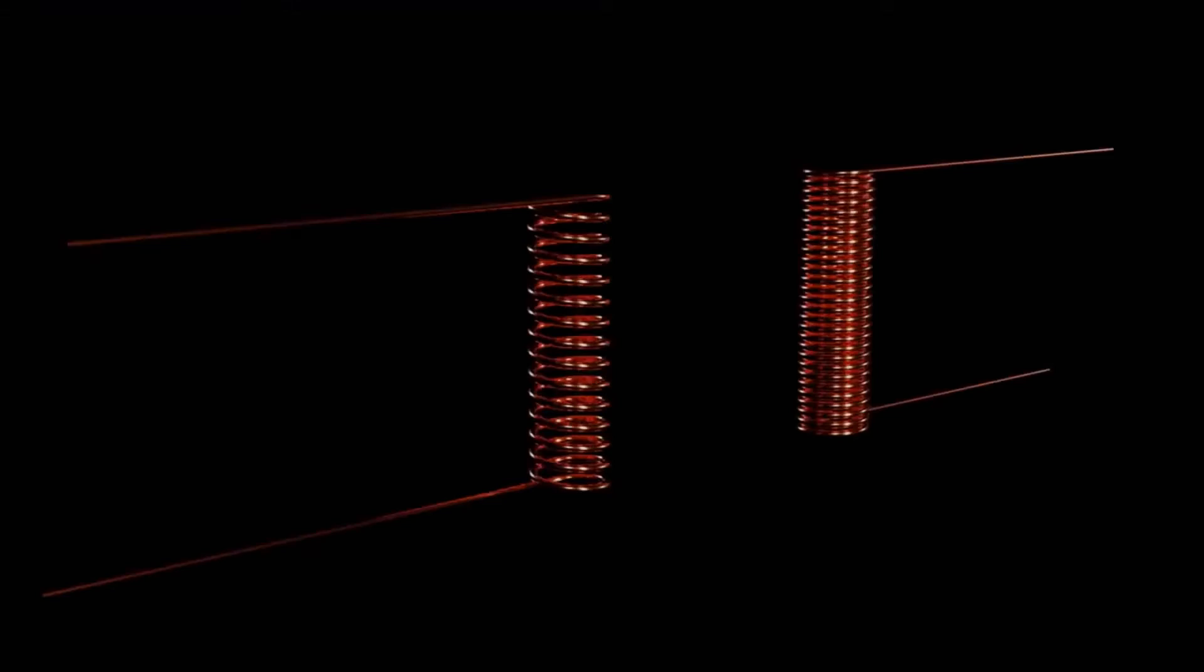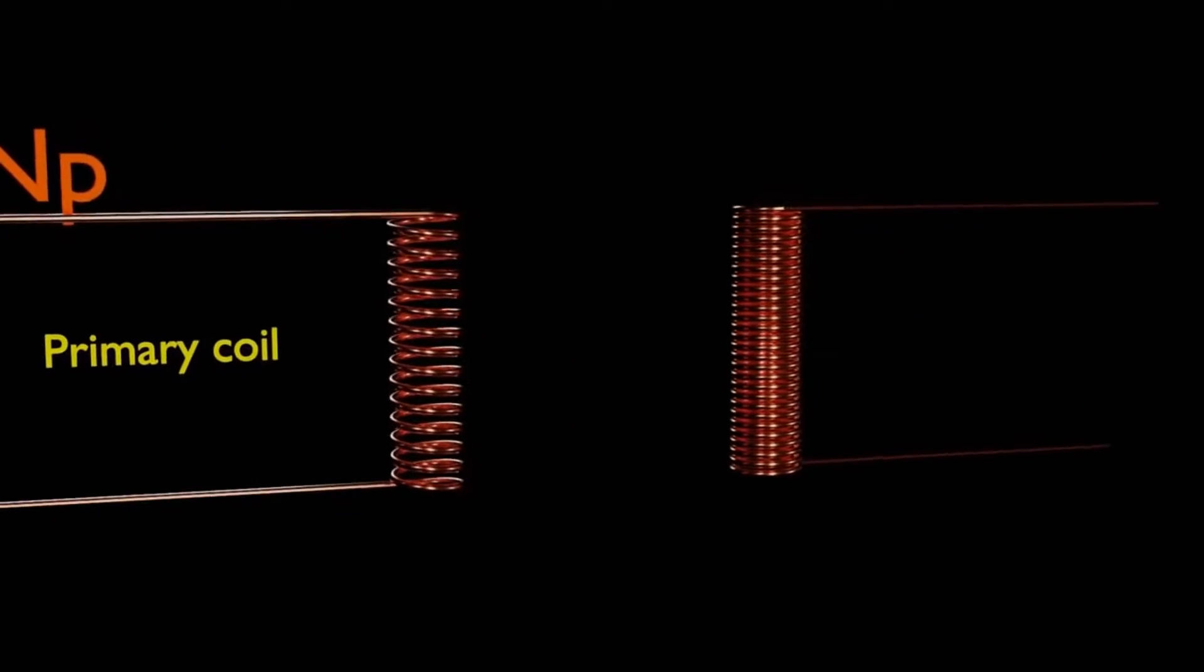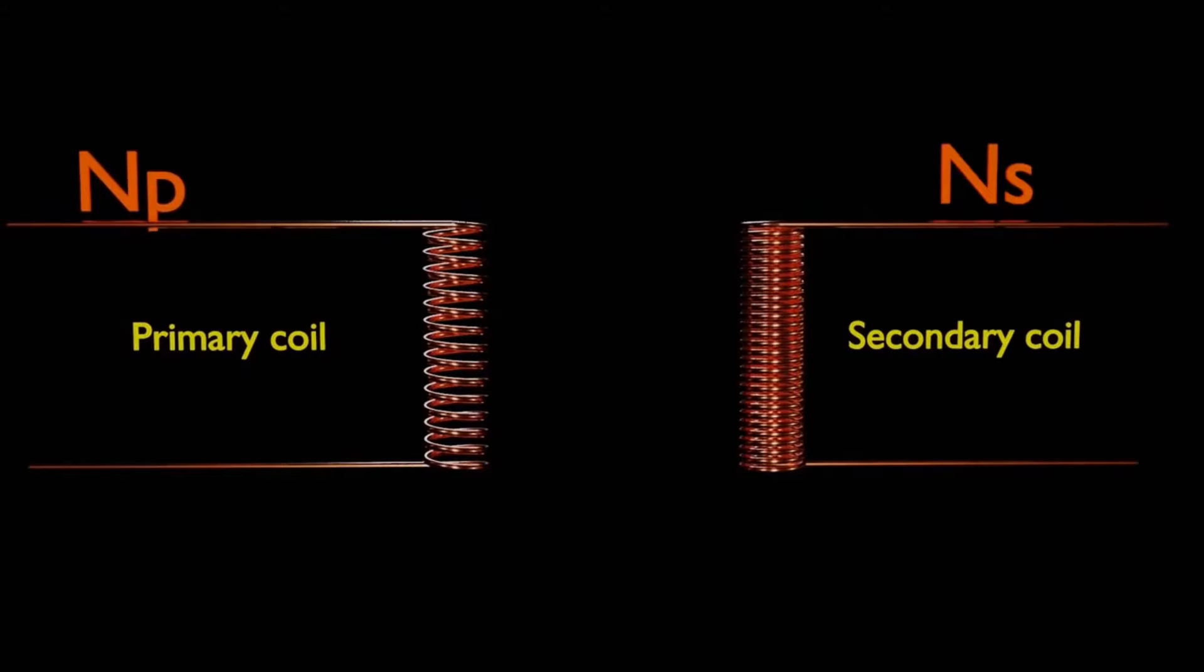At the heart of a transformer are its primary and secondary windings, made up of a multitude of turns of copper or aluminium wire. The length of this wire determines the resistance of the winding.